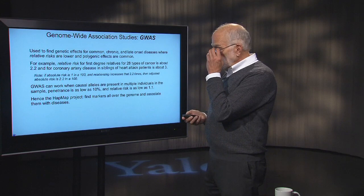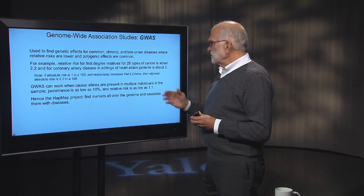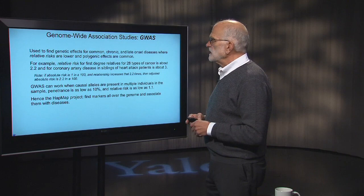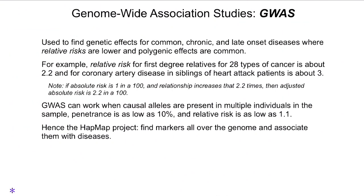For example, the relative risk for a first-degree relative for 28 kinds of cancer — meaning if mom or dad had cancer, how probable is it that you will have cancer — is about 2.2. In other words, if one of your parents had cancer, you are 2.2 times more likely to have cancer than a person sampled at random from the population. For coronary artery disease, if your brother has it, you are about three times as likely to have it as some random person from the population.